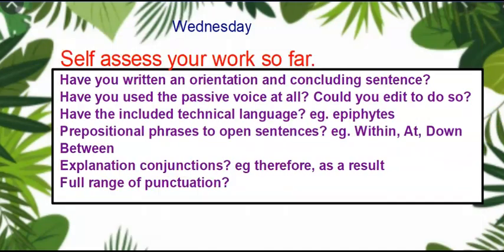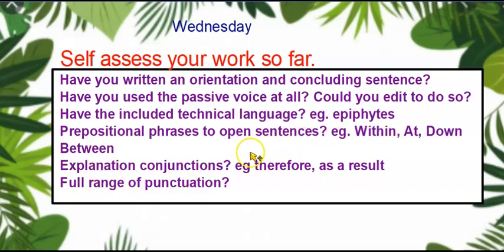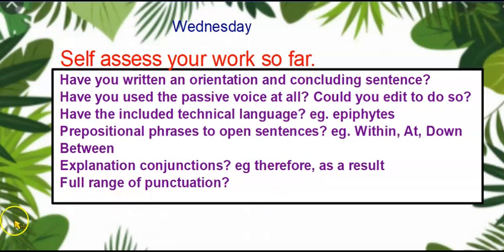Your last task today is to self-assess. Have you got your orientation and concluding sentence? Have you used the passive voice? If not, can you edit to do so? Have you used plenty of technical language — for example, epiphytes and other words discussed throughout? Prepositional phrases to open sentences — are you still using plenty of those? You might now be using words like 'between' or 'within' because we're sandwiched between layers. Have you used explanation conjunctions to develop your ideas so it doesn't just sound like a list of facts — for example, 'therefore' and 'as a result'? And have you used a full range of punctuation? Go back to the model write to have a look. Good luck!